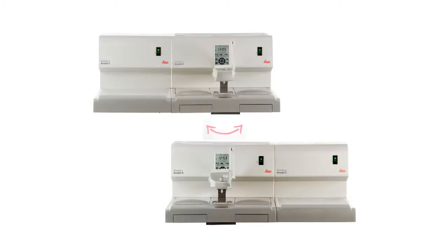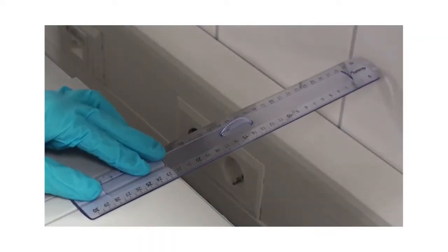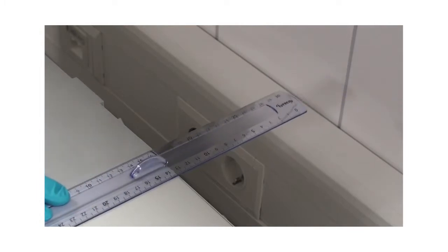Arrange the two independent HistoCore Arcadia modules according to the embedding workflow that best suits your laboratory workflow. The minimum distance between wall and instrument should be 15 cm.